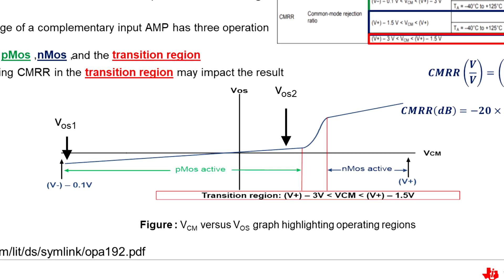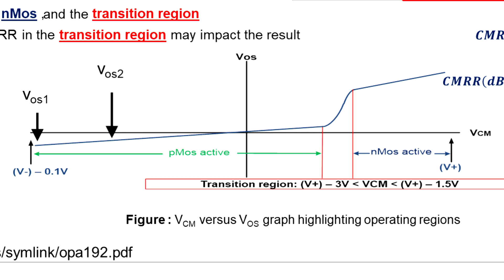As the common mode is shifted within the PMOS region, you see that the common mode rejection ratio, or the change in offset, is linear. However, operating in the transition region may impact the result because the change in common mode has resulted in a change in the offset, and the slope has shifted.